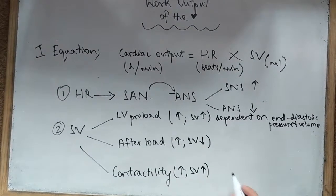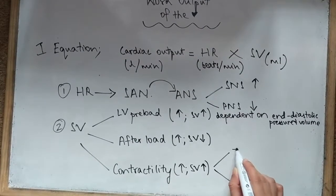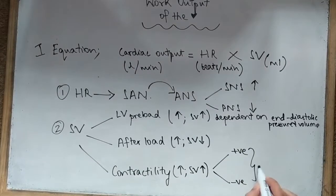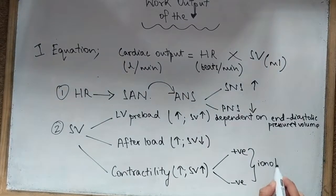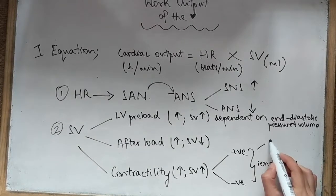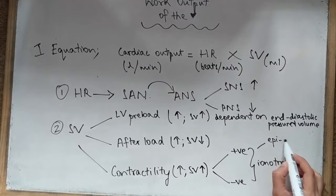Finally, we speak about the contractility, also known as the inotropy. It has to do with the sarcoplasmic free calcium concentration. We have two types of inotropes, which are like stimulants: the positive ones and the negative ones. The positive inotropes, such as epinephrine and norepinephrine, increase the cardiac contractility.